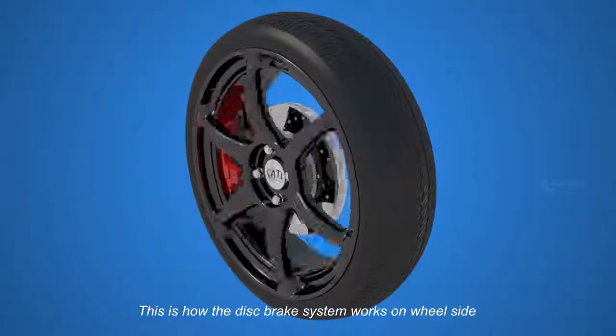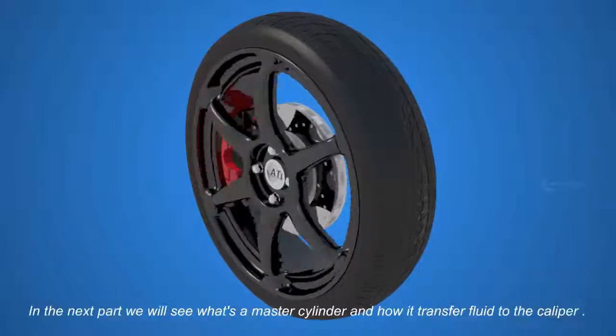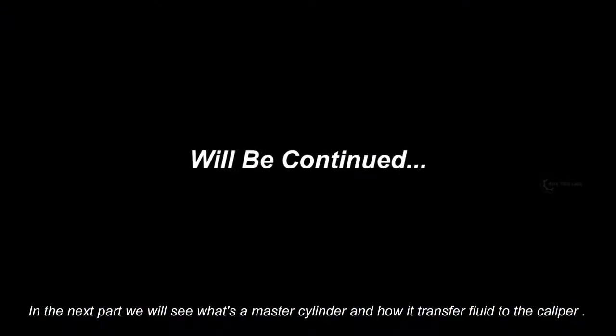This is how the disc brake system works on wheel side. In the next part, we will see what's a master cylinder and how it transfers fluid to the caliper.